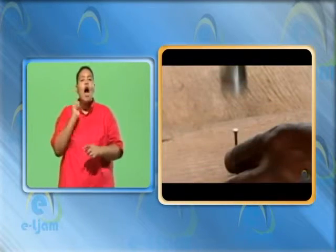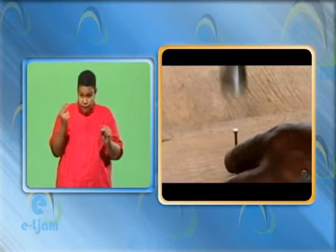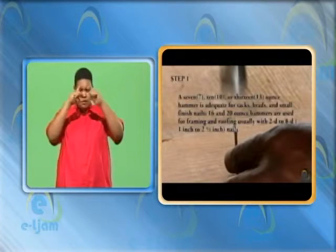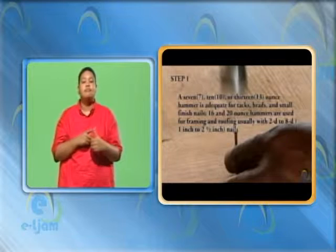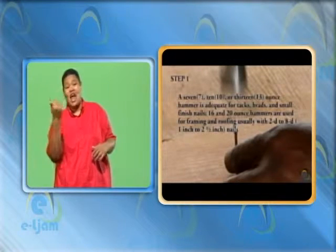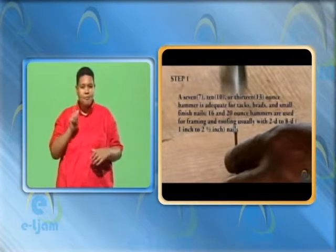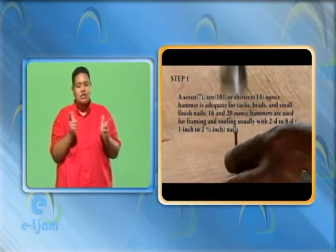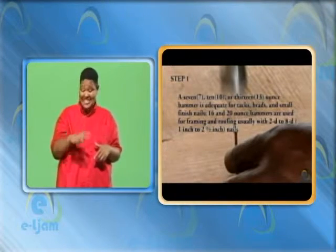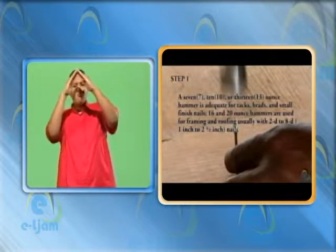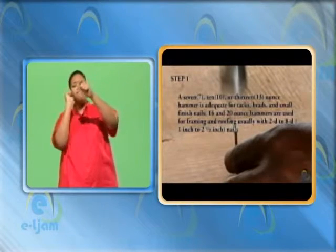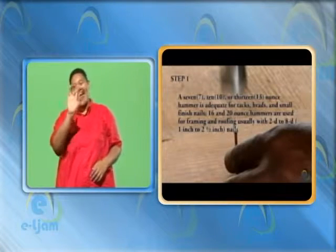Safe use of a claw hammer. Step 1: to safely use a claw hammer, select the weight appropriate to the fastener to be struck and ensure that you are wearing the necessary safety glasses. A 7, 10, or 13-ounce hammer is adequate for tacks, brads, and small finish nails. 16 and 20-ounce hammers are used for framing and roofing, usually with 2D to 8D, or 1 to 2.5-inch nails.